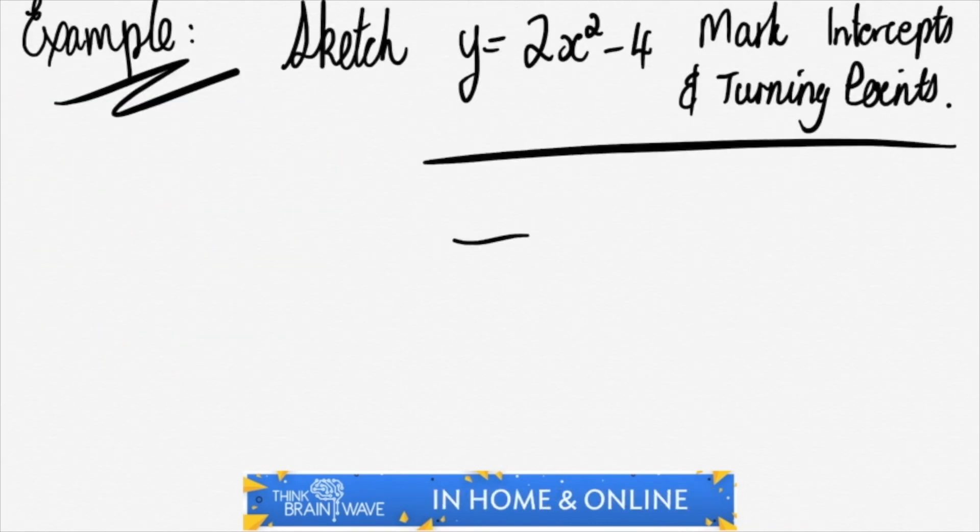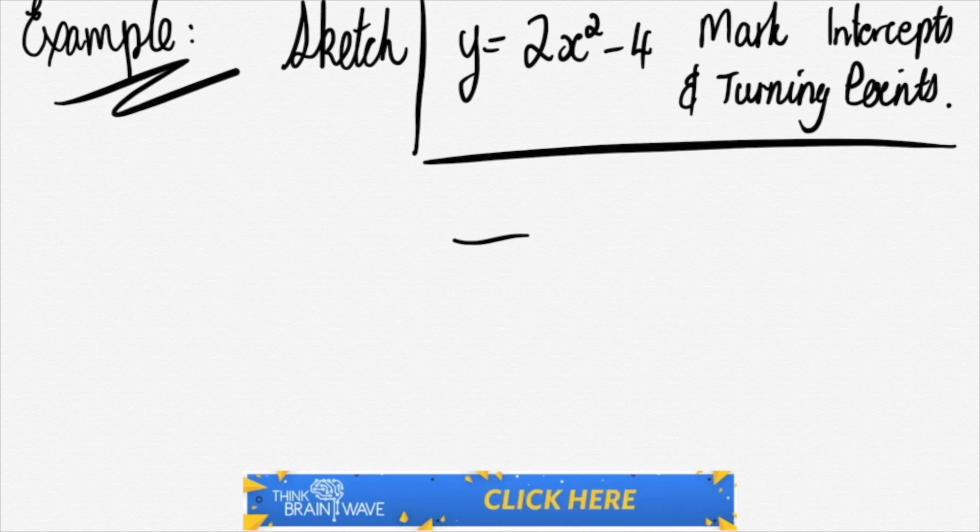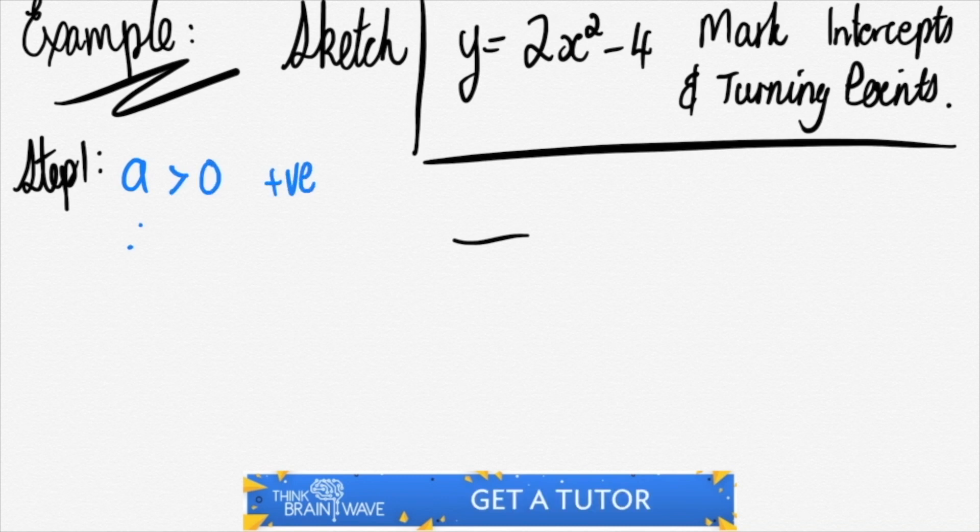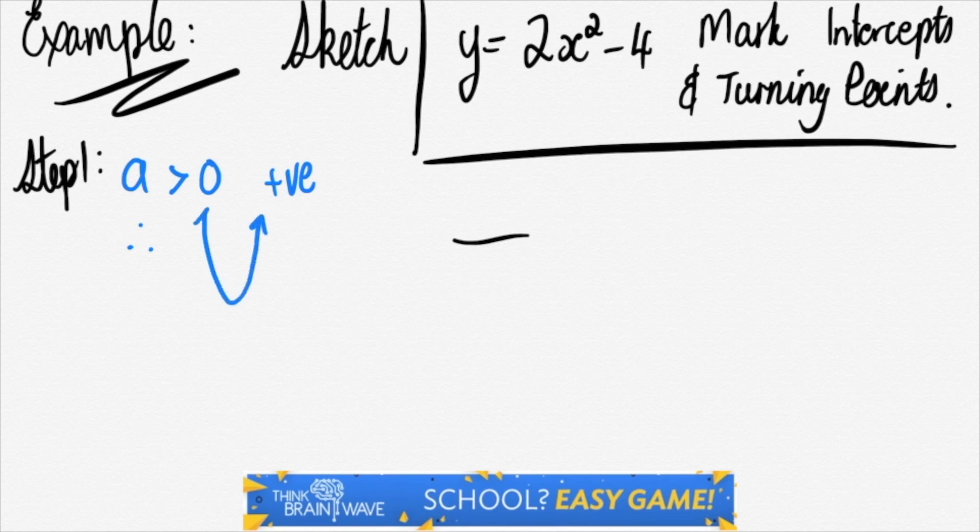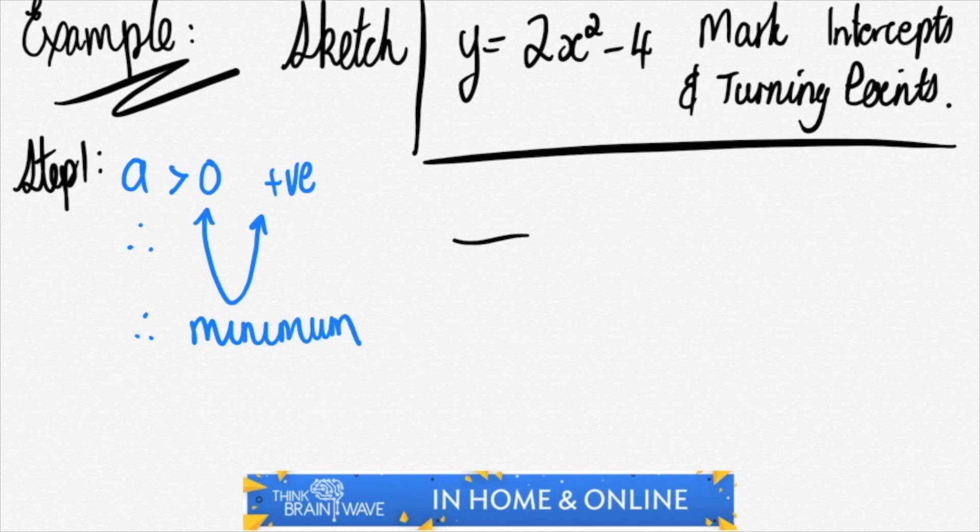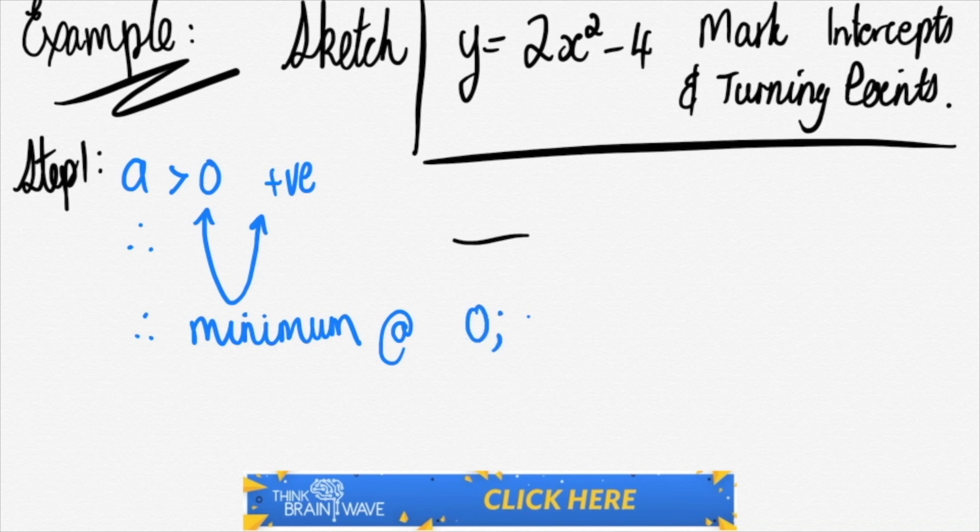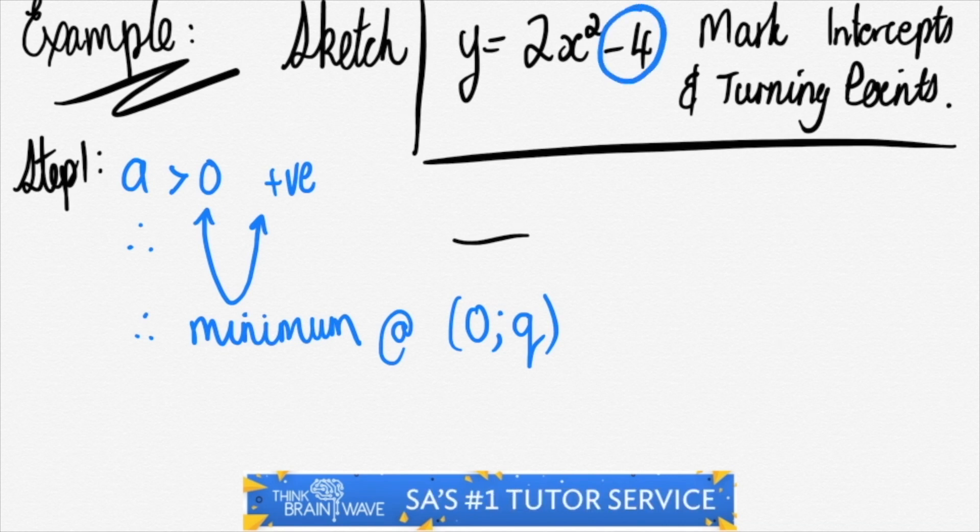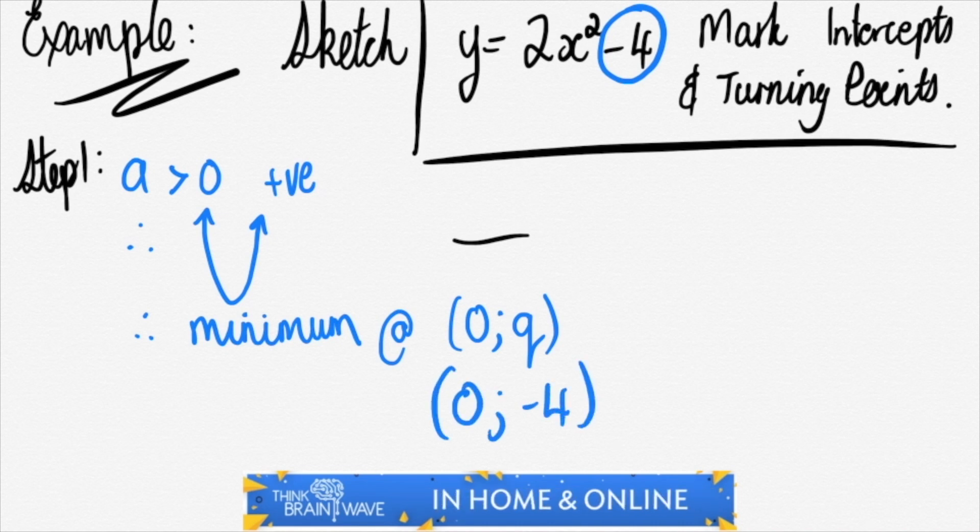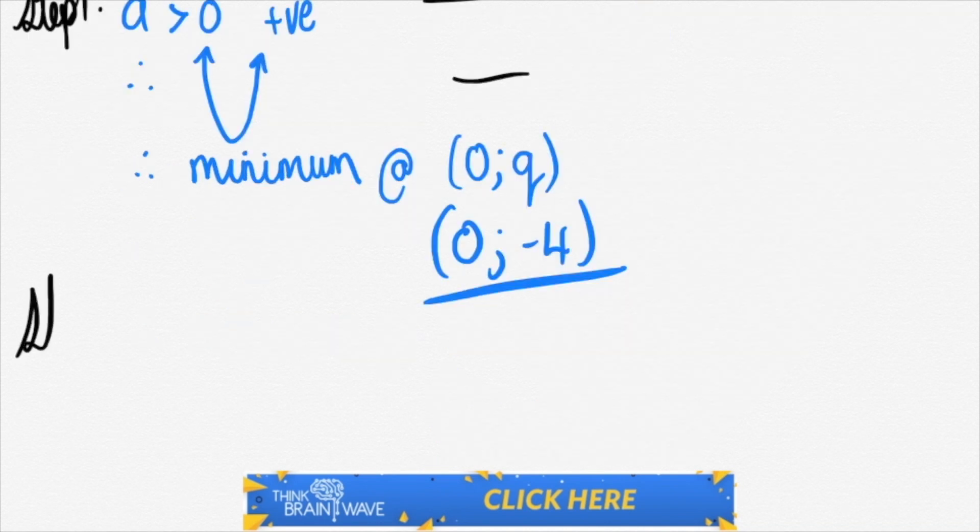So minus four instantly you know that the graph is going to shift down by four units. You can see that there's a 2 which is positive meaning that it's a smiley face. So a is greater than 0, which is positive. It's greater than 1 as well which means it should be relatively wide. And there will be a relative minimum at the point 0 minus 4. In this case we're just saying q but we know that it's going to be minus 4, because when I plug 0 into x I get 2 times 0 which is 0 and I'm left with minus 4.